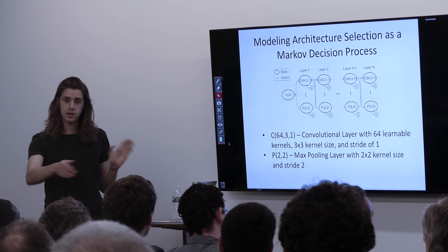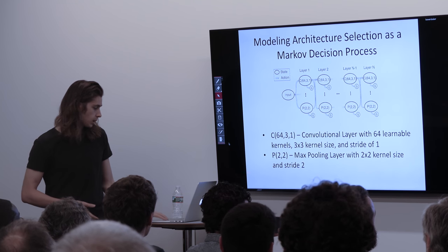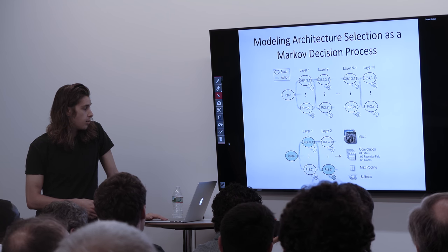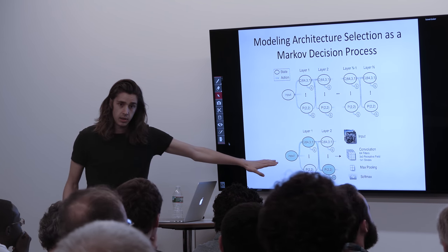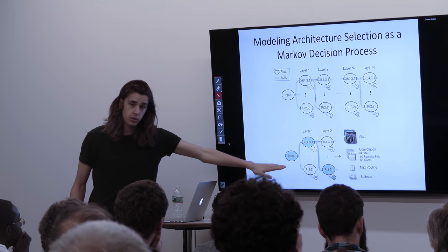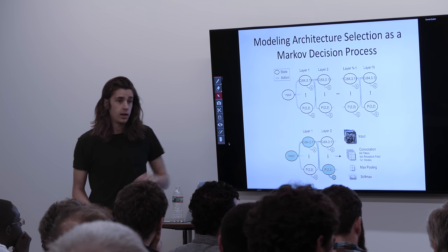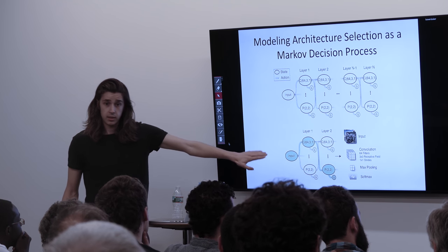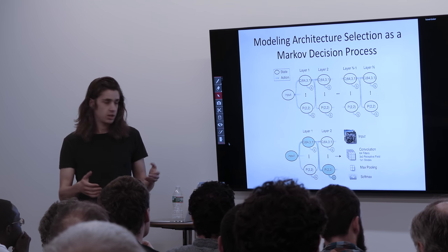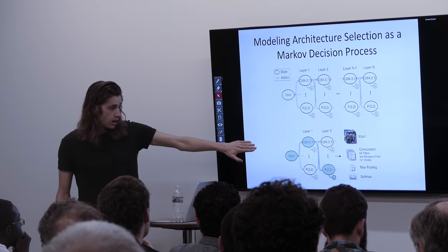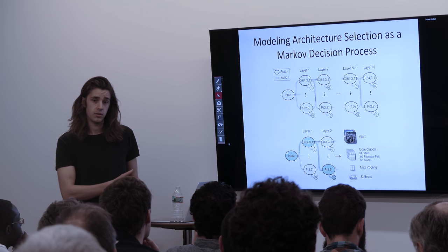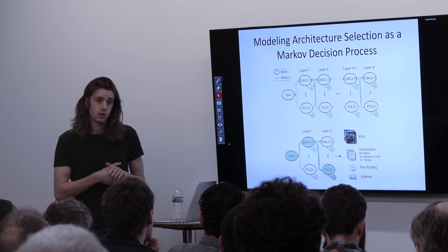The agent goes through this environment selecting layers until it decides to stop, then a softmax is placed at the end — and that's a neural network. For example, the agent might start at input, choose a convolutional layer, then a pooling layer, then go to the goal state. The resulting simple network is: input → convolutional layer → pooling layer → softmax. This is a trainable neural network you can evaluate on whatever task you're trying to do.